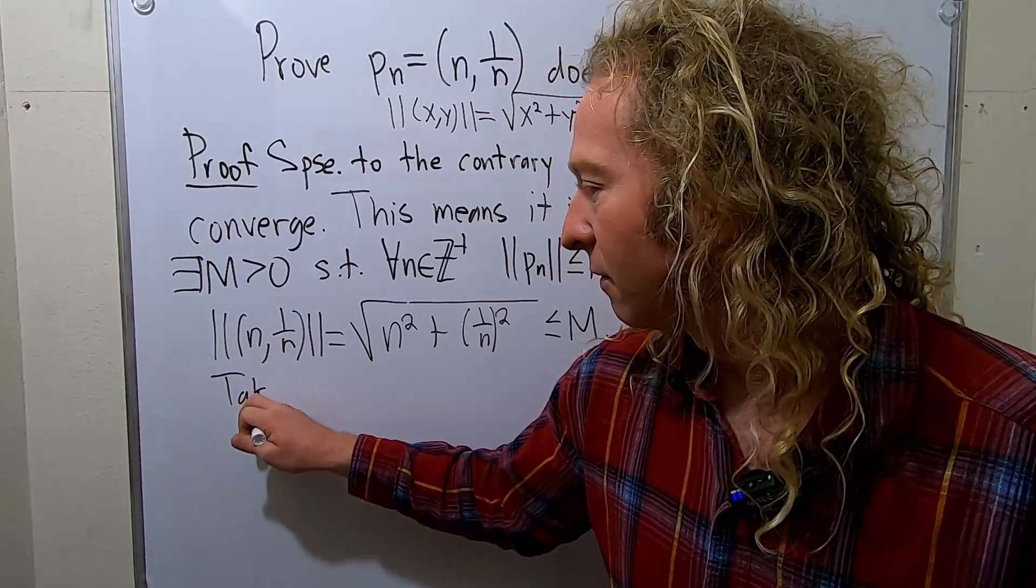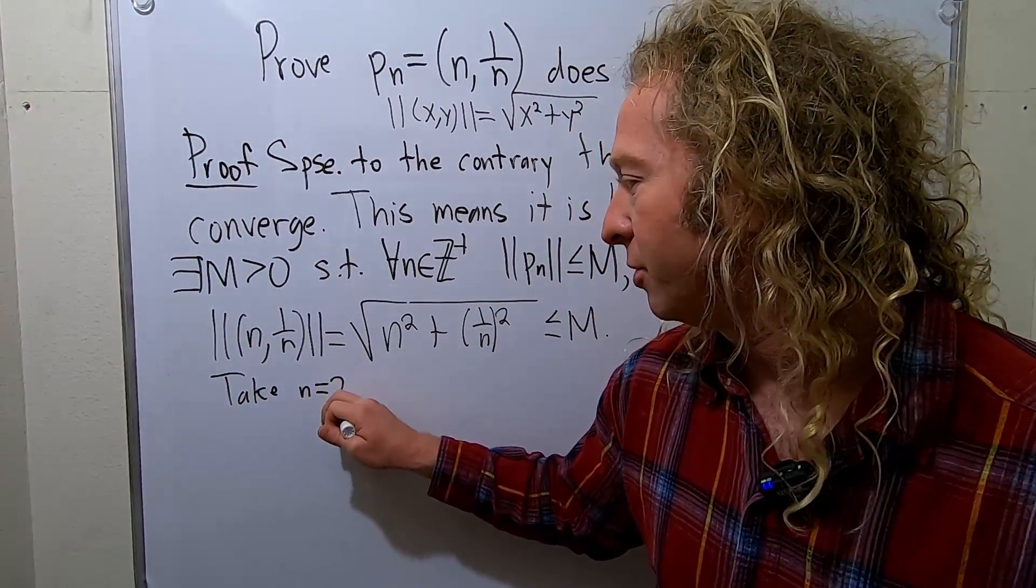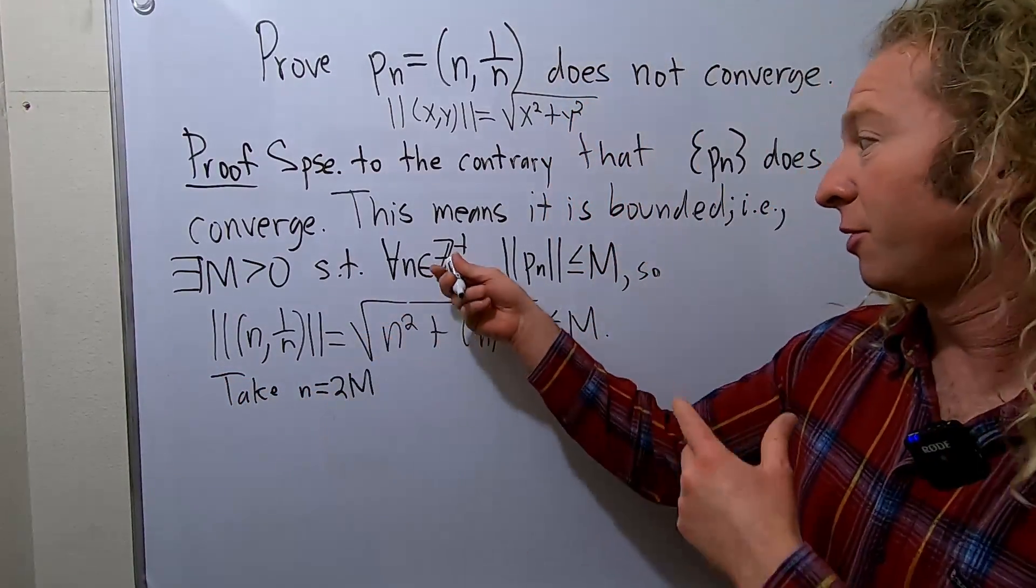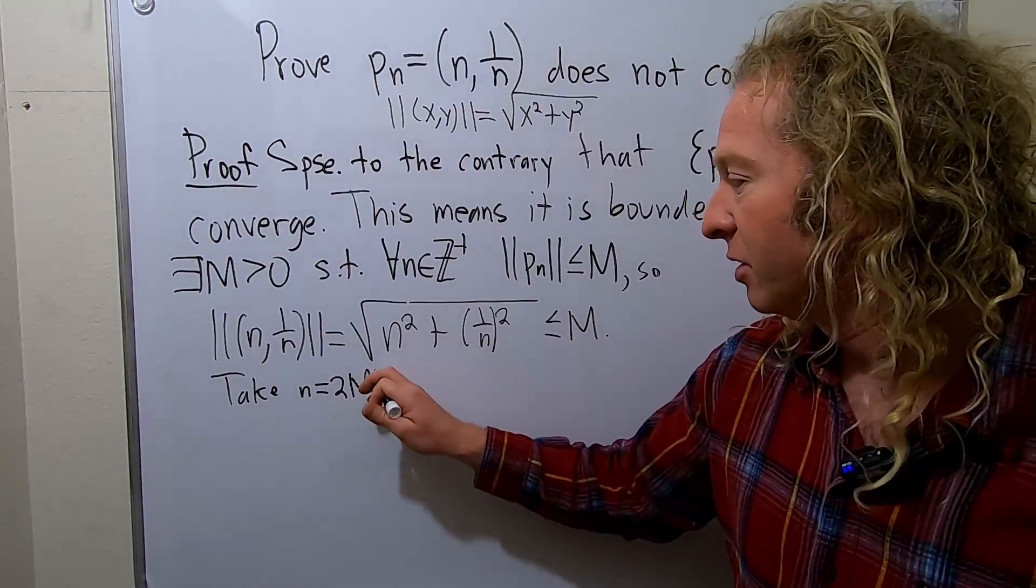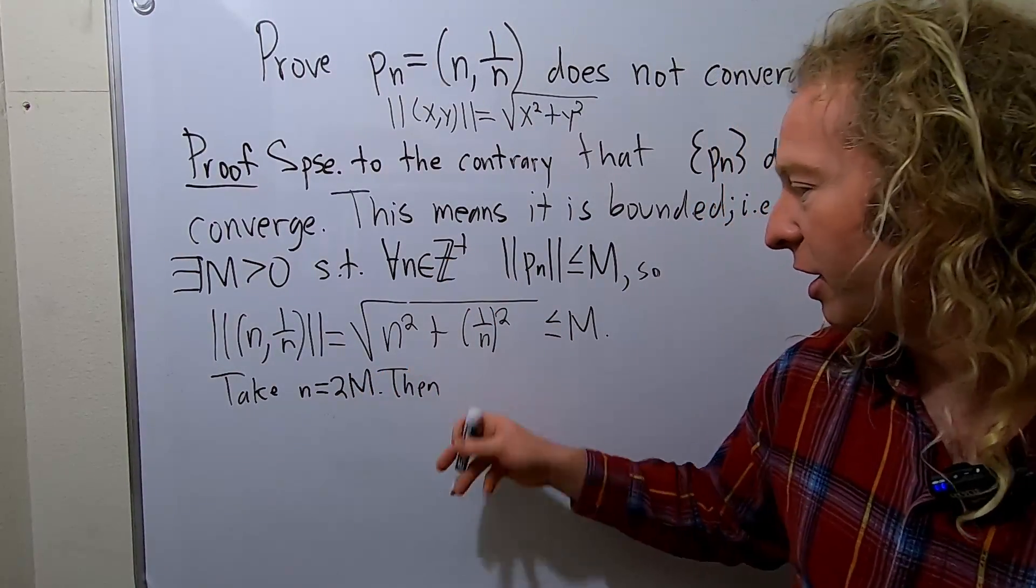So take little n equals 2 times big M. That's certainly a positive integer. And so now we're going to reach a contradiction. So then, let's just plug it in here.